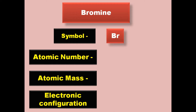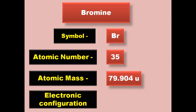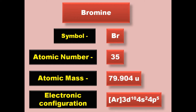Bromine has symbol Br, atomic number 35, atomic mass 79.904, electronic configuration [Ar] 3d10 4s2 4p5. Bromine is a halogen and exists in liquid form at room temperature.